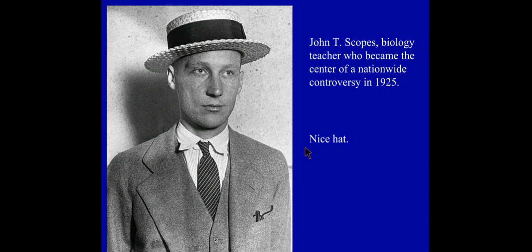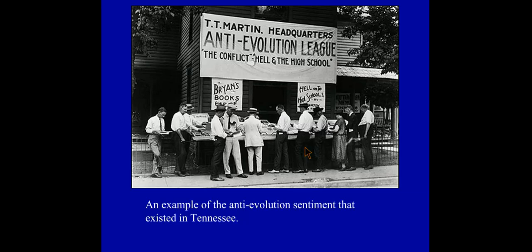John T. Scopes became a nationwide figure when in 1925 he broke a Tennessee law which banned the teaching of evolution. Supported by the ACLU — the American Civil Liberties Union — he decided to teach the theory of evolution, which went against many people's religious beliefs, and to promote the ideas of science over the ideas of creationism. This trial, known as the trial of the century, the monkey trial, or the Scopes trial, really highlights tension in society. Though Scopes was found guilty of breaking the law, he exposed a big division in American society.